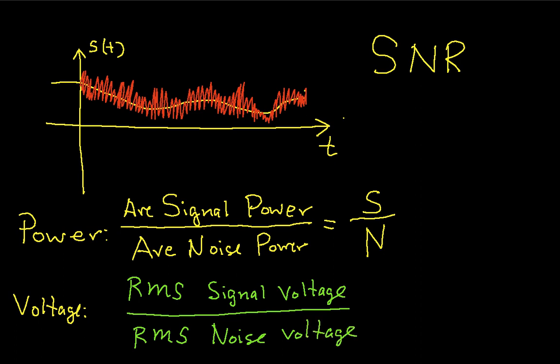You would expect these two to be related because, either from your previous experience or a previous video, the average signal power is given by, or can be computed by squaring the RMS signal voltage. And the average noise power can be computed by squaring the RMS noise voltage.